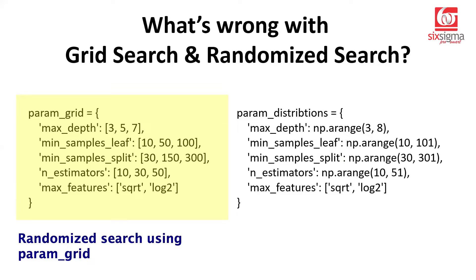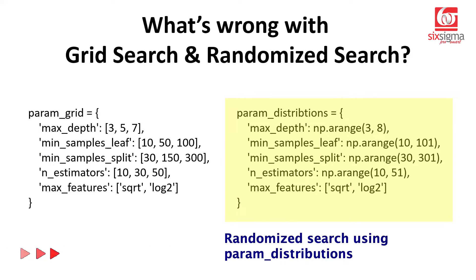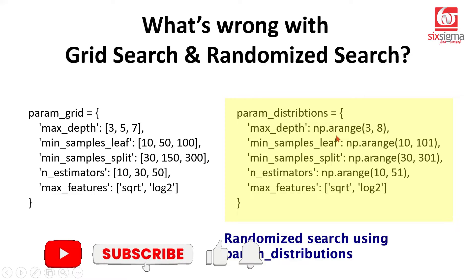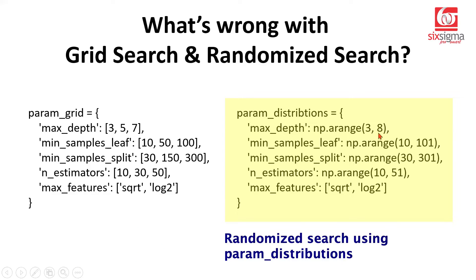We then discussed randomized search, where we explore certain random combinations of hyperparameters from the grid. We could also choose a distribution — using a library like numpy, we could give a range of values. So when we say np.arange(3, 8), it takes values from 3 to 7. In grid search we might try only values 3, 5, and 7, but with a distribution we try all values from 3 to 7 with a step size of 1. Similarly for min_samples_leaf, giving a range from 10 to 100 with step 1 tries all possible random values in that range.